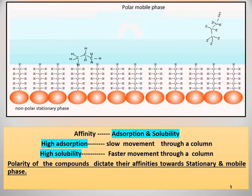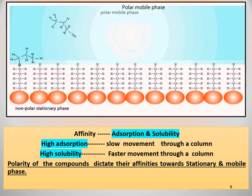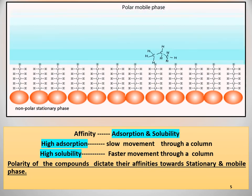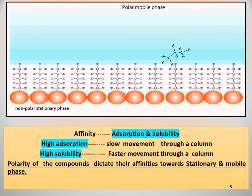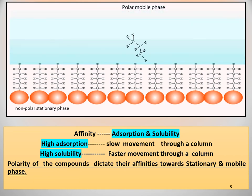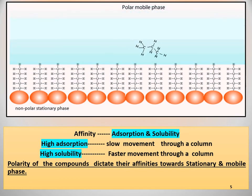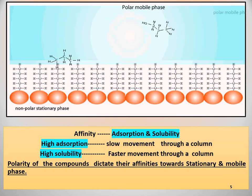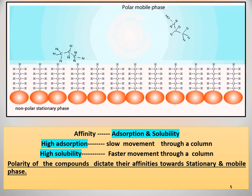Let's discuss an example. As you can see, propanol-1 is more soluble in the mobile phase than propane. So it flows with greater speed through the column than propane, which interacts more with the nonpolar stationary phase than the mobile phase. The affinity of the components towards the stationary and the mobile phases is facilitated by their adsorption and solubility. High adsorption means slow movement of molecules through a column, and high solubility means faster movement of molecules through a column.